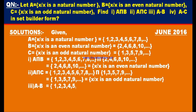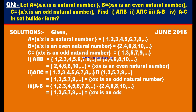Third bit: A minus B. A = {1, 2, 3, 4, 5, 6, 7, 8, ...} minus B = {2, 4, 6, 8, 10, ...}. The elements that belong to the first set only are 1, 3, 5, 7, 9, and so on. In set builder form, A minus B = {x | x is an odd natural number}.